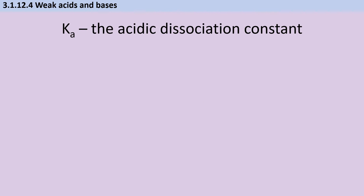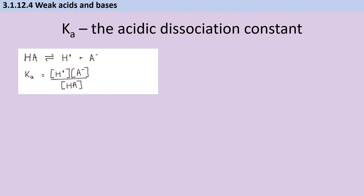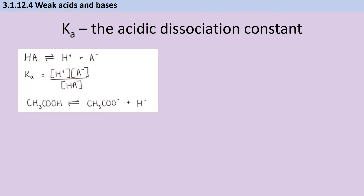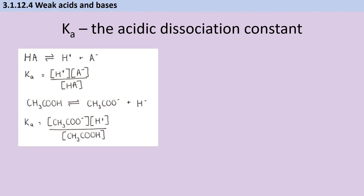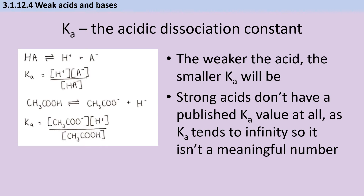Next we think about weak acids. Ka, also known as the acid dissociation constant, is a specific example of Kc but for weak acids. A weak acid dissolves to produce a few hydrogen ions and anions, so we can write an expression for Ka with hydrogen ions and anions on the top and the undissociated acid below. The weaker the acid, the smaller the Ka value, and any Ka value smaller than 1 implies a weak acid. Strong acids tend not to have a published Ka value because Ka would tend to infinity, so it's not a meaningful number.